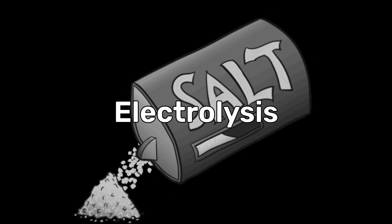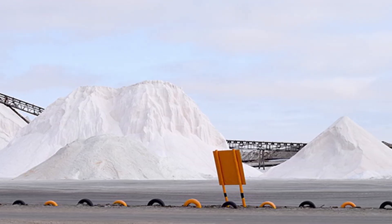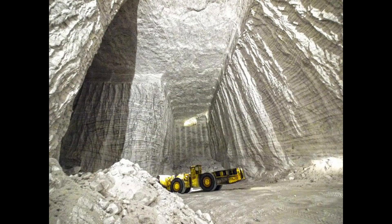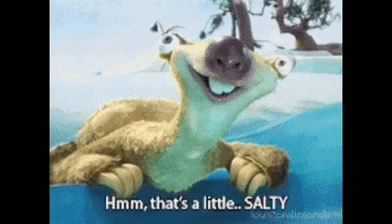Today, sodium is mainly extracted from sodium chloride through the process of electrolysis. Large reserves of sodium chloride are found in seawater and underground salt deposits. Sodium ranks as the sixth most common element in the earth's crust and is highly abundant in ocean water.